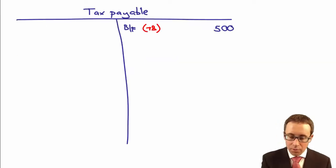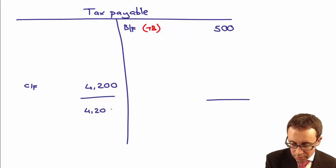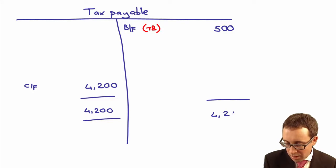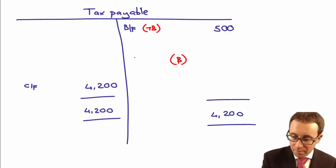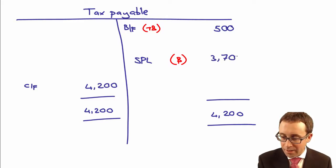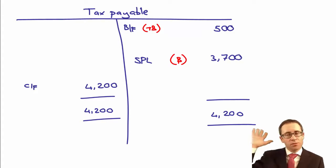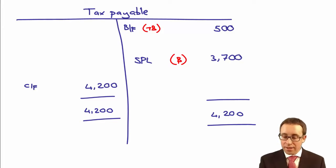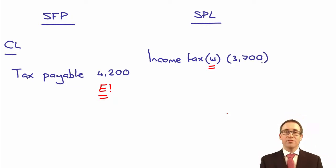The income tax expense: you put in the carry-forward figure of 4,200, balance off both sides, and work out the balancing figure, which is taken to the statement of profit or loss. With the 500 credit opening balance and the 4,200 year-end estimate, the balancing figure — the expense in the statement of profit or loss — is 3,700, which is $3,700,000.